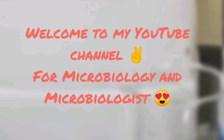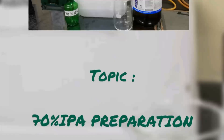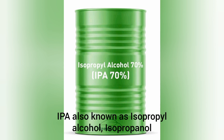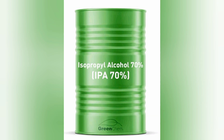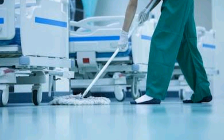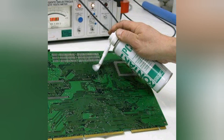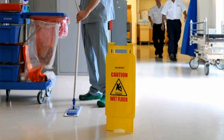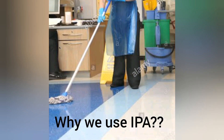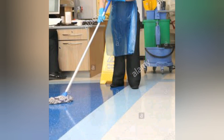Hello and welcome to this channel. Today our topic is 70% IPA. IPA is basically known as isopropanol or isopropyl alcohol. It is widely used as a disinfectant in pharmaceuticals, hospitals, clean rooms, electronics industries, and medical device manufacturing. It is commonly used for cleaning purposes.